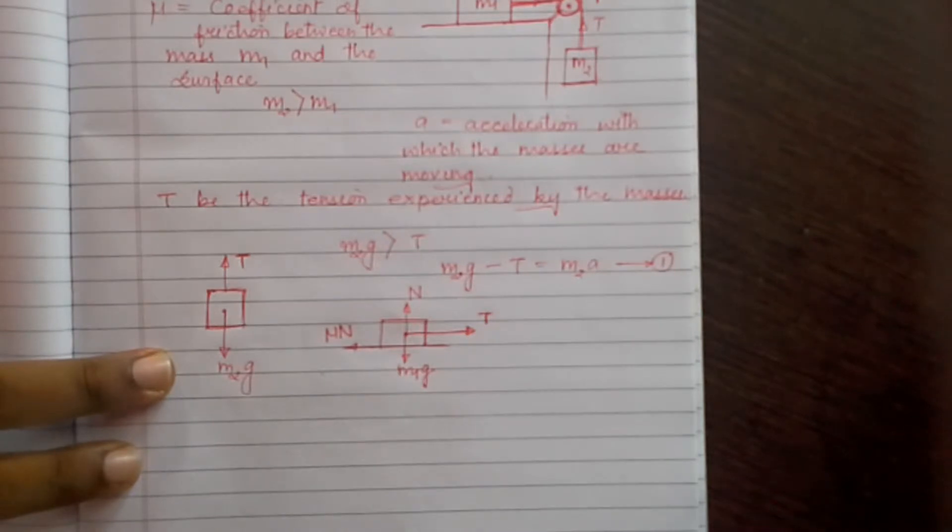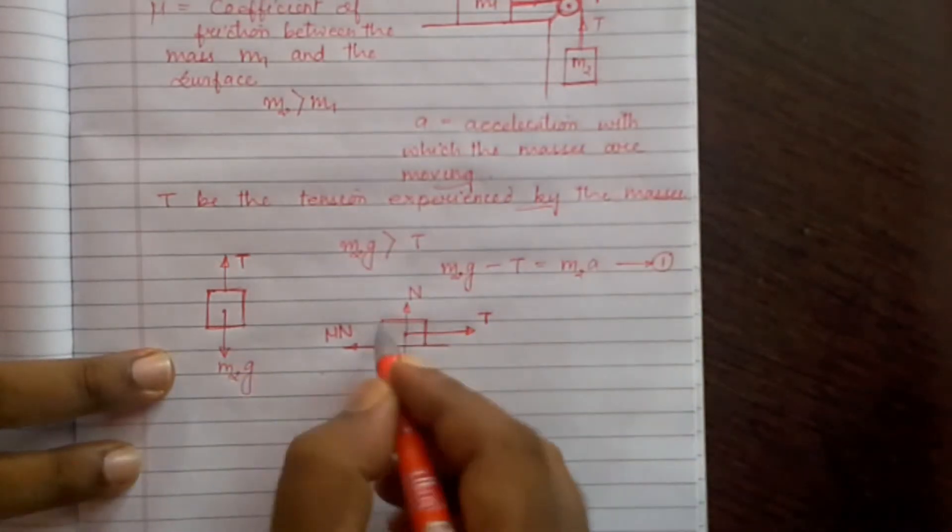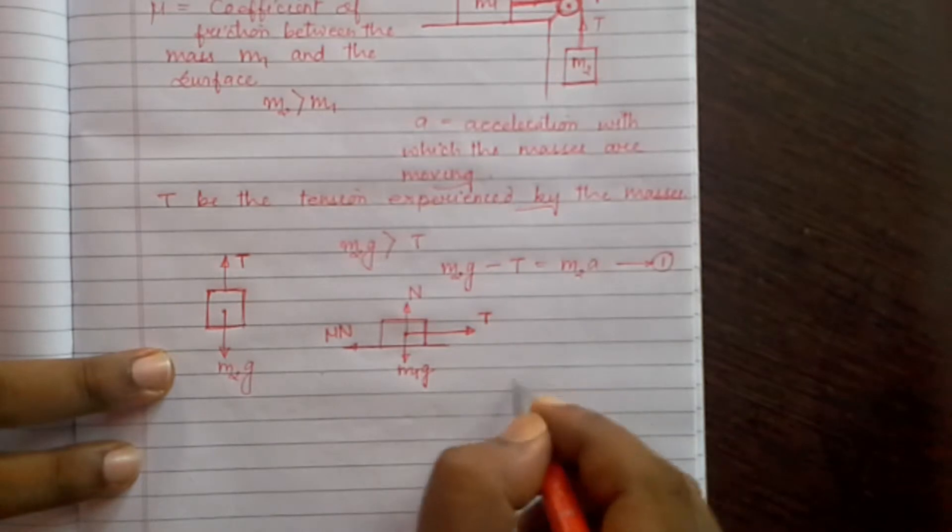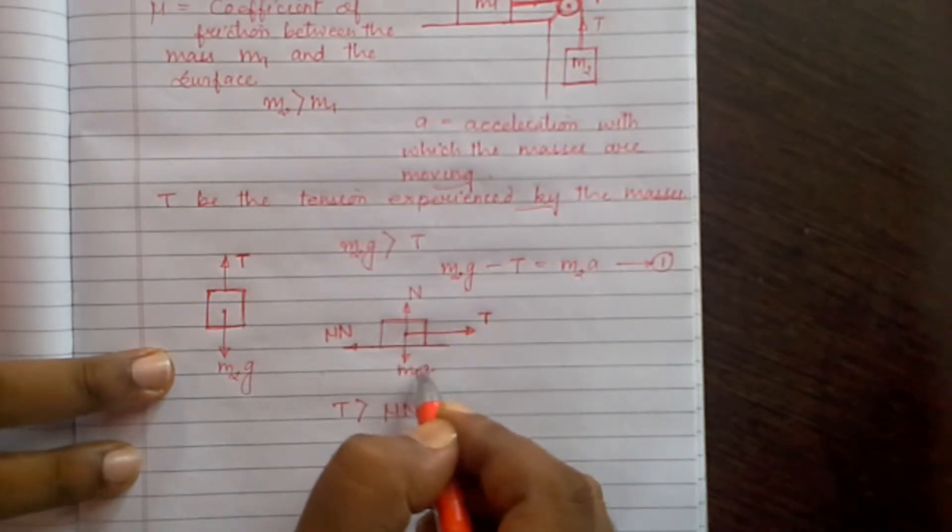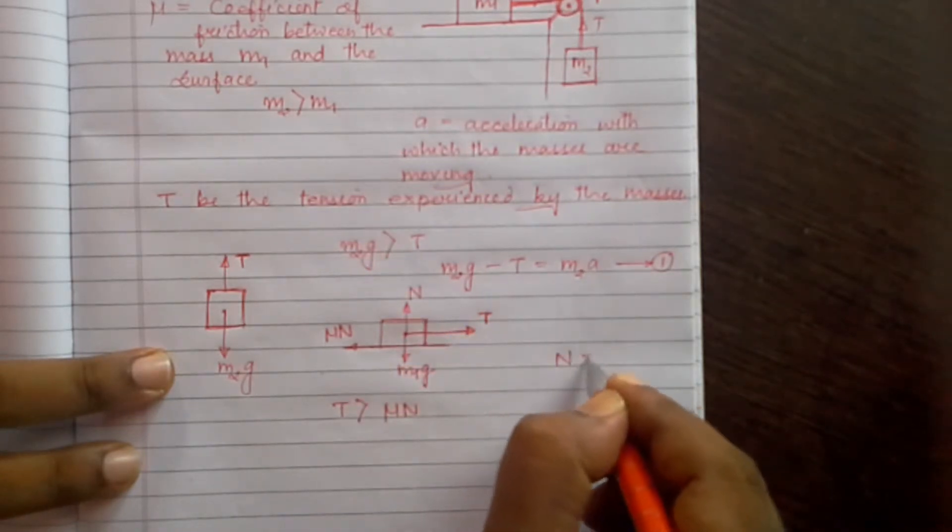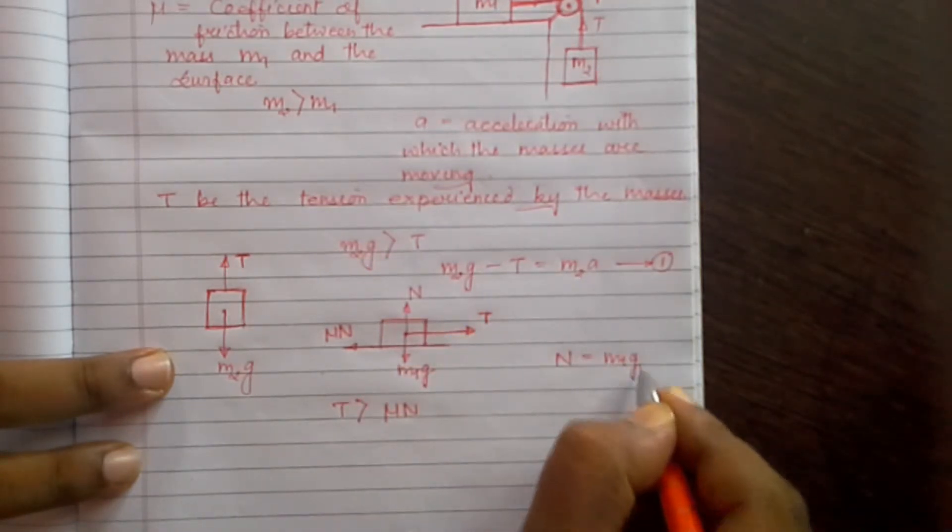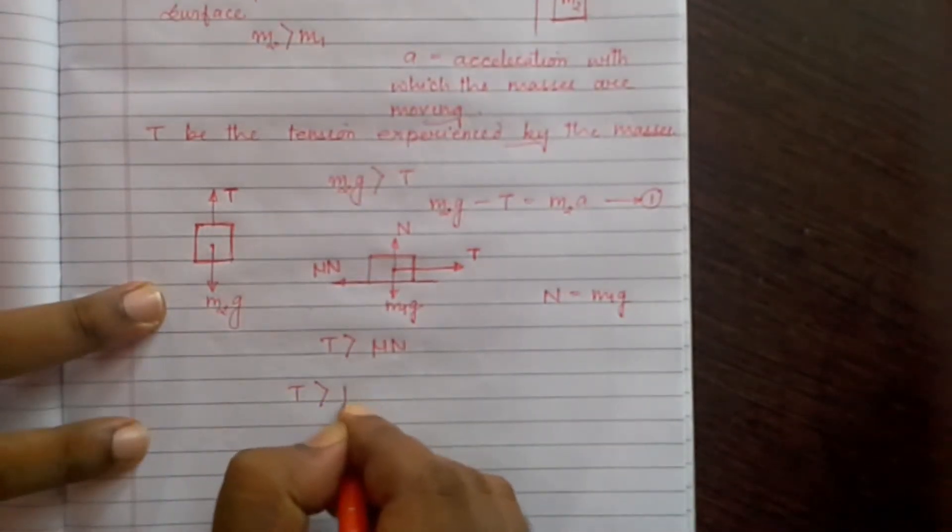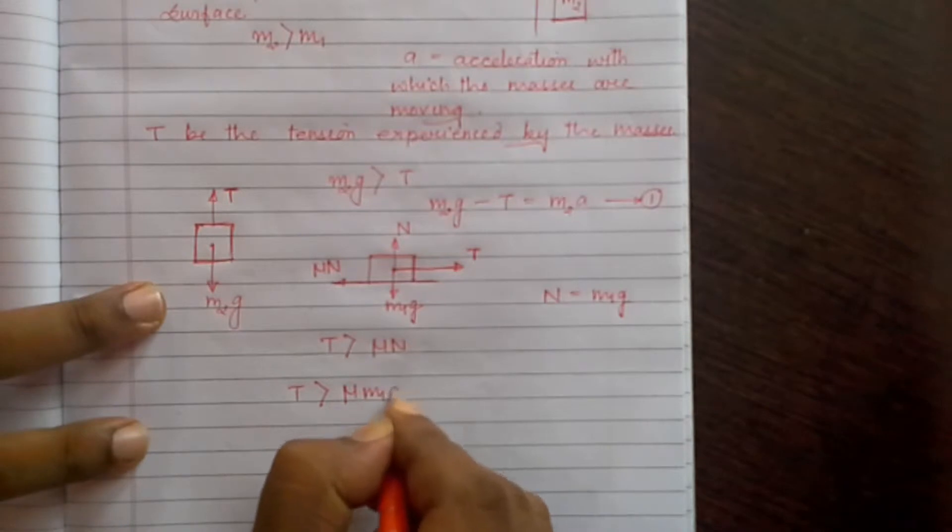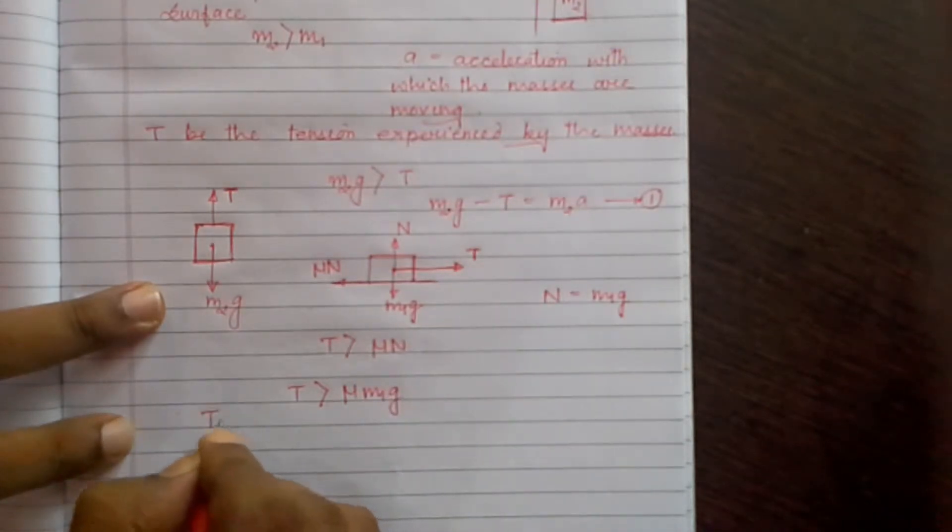Since the body is moving in this direction, we can say tension T is greater than mu times N. And M1g and N are balanced, so we can write N is equal to M1g, or we can say T is greater than mu times M1g.